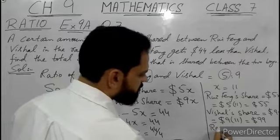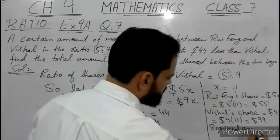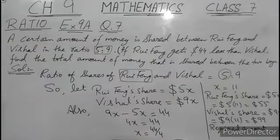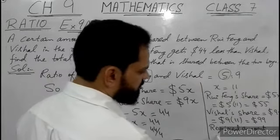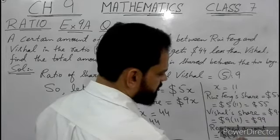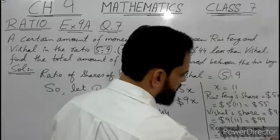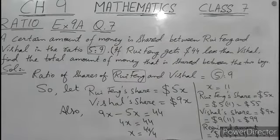The required amount — the total amount — is found by adding Ruifeng's and Vishal's shares: 55 dollars plus 99 dollars gives 154 dollars. Now I do question number 8.